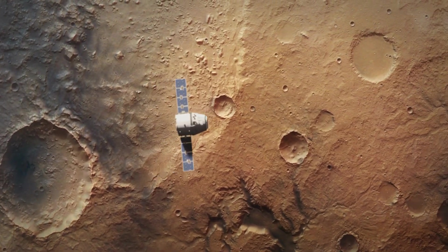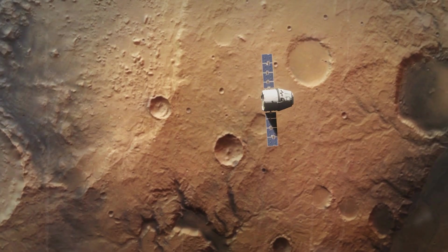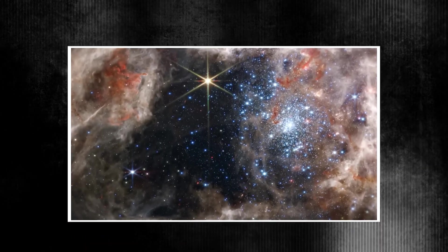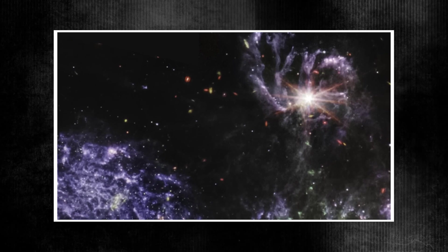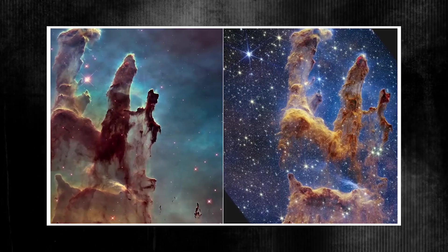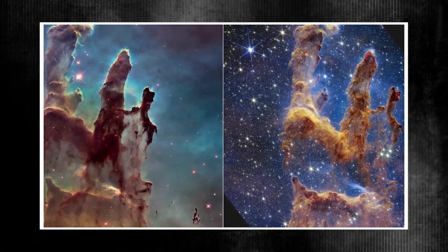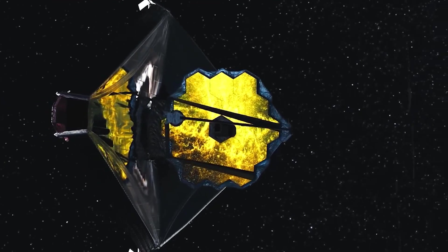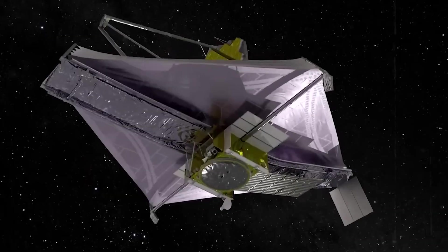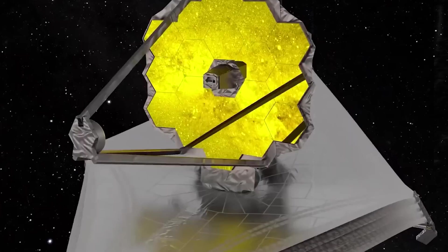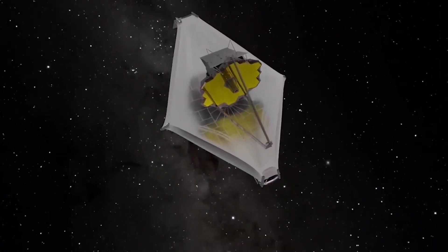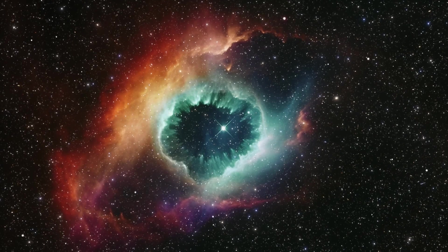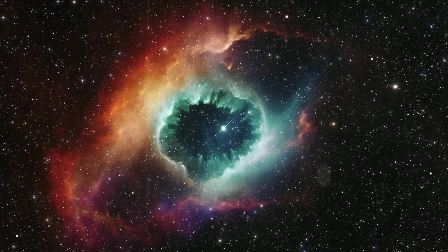JWST captured this stunning planetary nebula using two of its powerful instruments, the near-infrared camera, NIRCam, and MIRI, providing complementary views. Unlike regular nebulas, which are star-forming regions, planetary nebulas are the remnants of dying stars. The term planetary nebula is a historical misnomer. Early astronomers named them after their rounded shapes, which resembled planets through primitive telescopes. The name endured, though its meaning has since evolved.